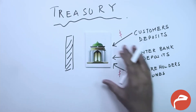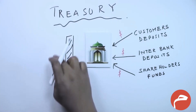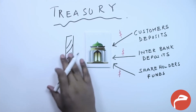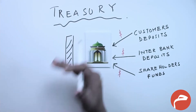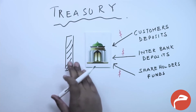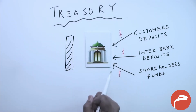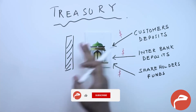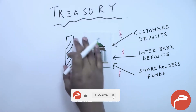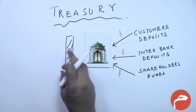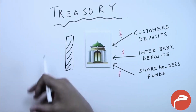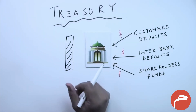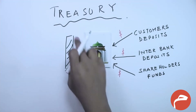All funds get collected and pooled in the Treasury. A very important duty of the Treasury Department is to manage liquidity and ensure it is available for current and future obligations — for example, to address customer withdrawals and to repay financing taken from other banks. At the same time, the Treasury Department must ensure that liquidity is invested effectively so that it generates profits, which are given back to the various entities who have invested in the bank.